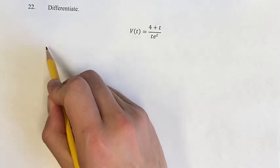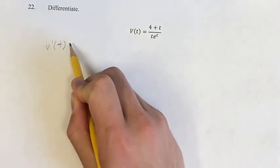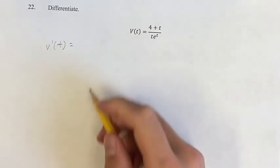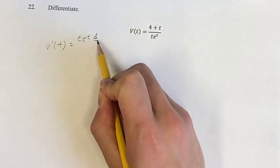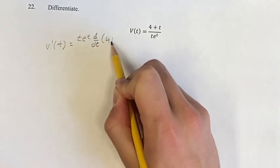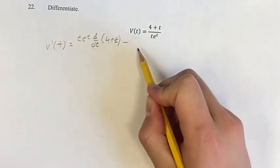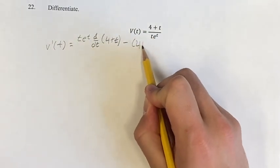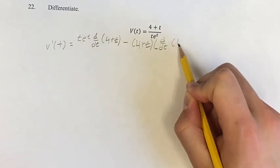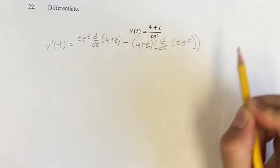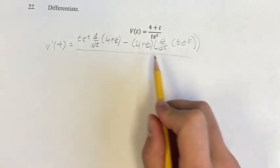So we have a fraction here, so we're going to use the quotient rule. The derivative of v is going to be equal to the denominator times the derivative of the numerator minus the numerator times the derivative of the denominator, all over the square of the denominator.